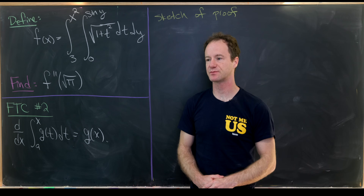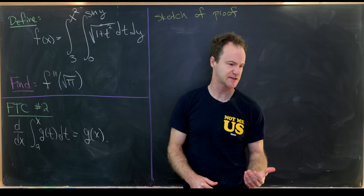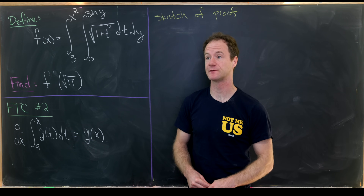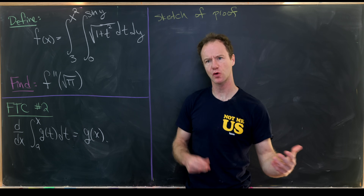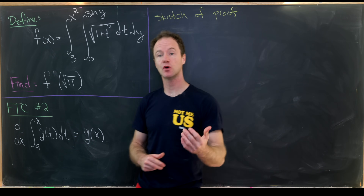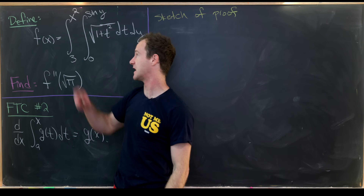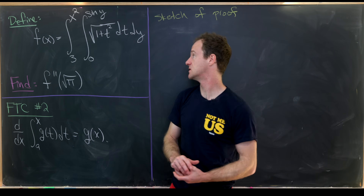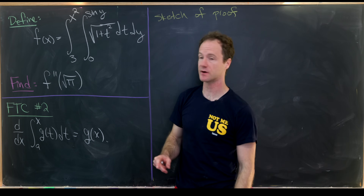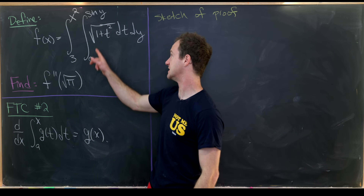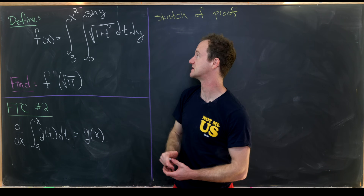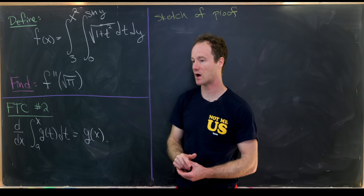Today we have a nice differential calculus problem that truly tests a person's understanding of a bunch of rules from differential calculus. We'll see that along the way as we make the calculation. We start by defining a function f(x) to be equal to the integral from 3 to x squared, and then the integral from 0 to sine of y of the square root of 1 plus t squared dt dy.